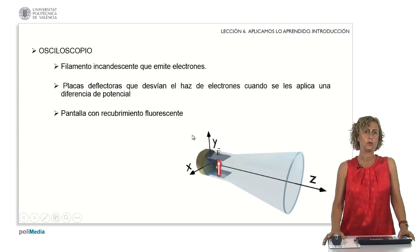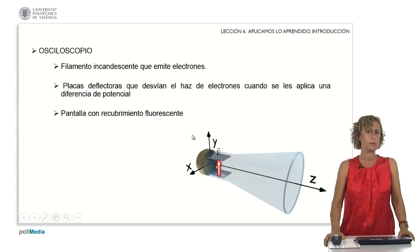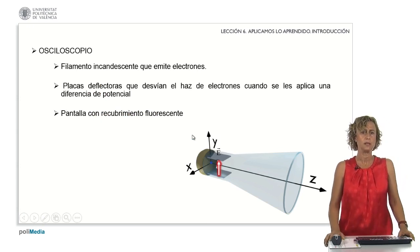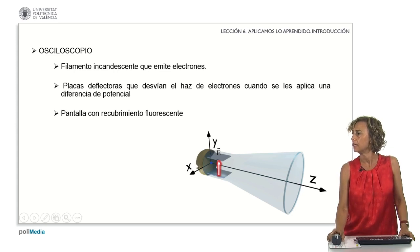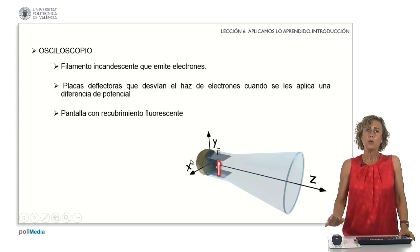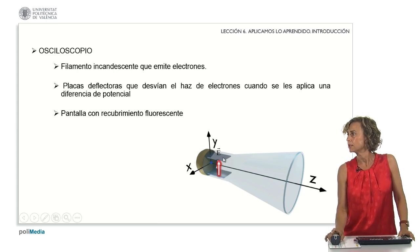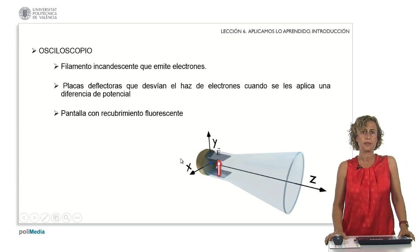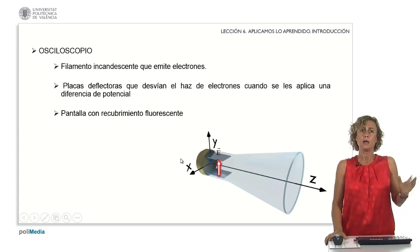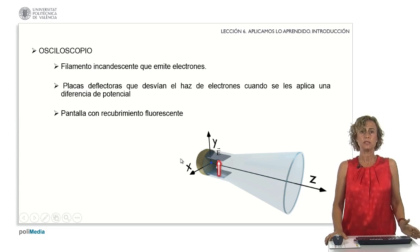Basically, an oscilloscope consists of an incandescent filament that emits electrons from the cathode to the anode, and deflector plates — which are these here — which are responsible for deflecting the electron beam when a potential difference is applied to them, so there will be an electrostatic field.